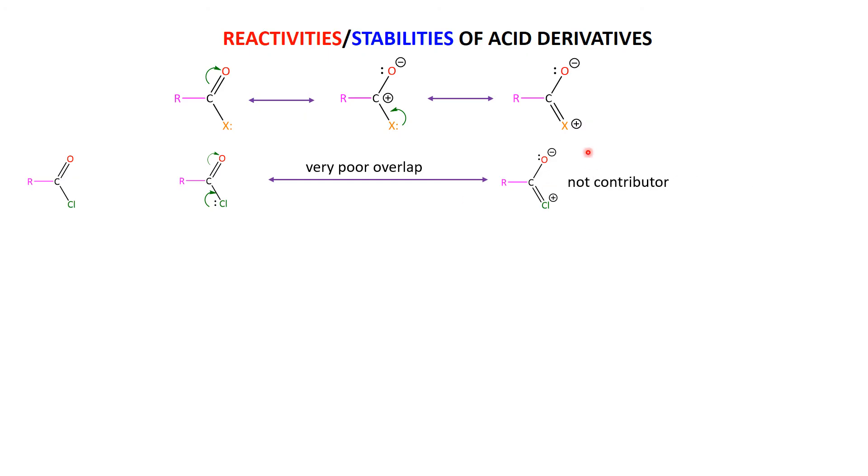So we're going to have very poor overlap between the p orbitals, which means that this carbon-chlorine double bond is not going to be a contributor at all. This really doesn't exist. So in other words, no stabilisation of the pi electrons allowed acid chlorides, very reactive, because we can't stabilise this molecule.